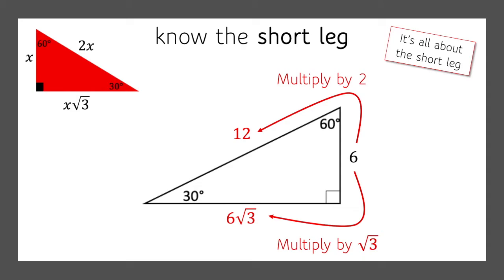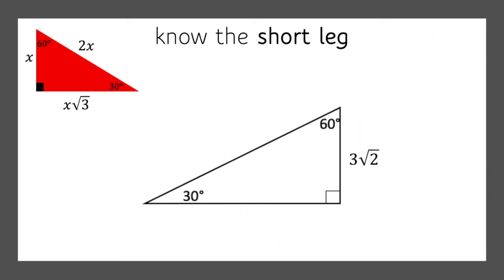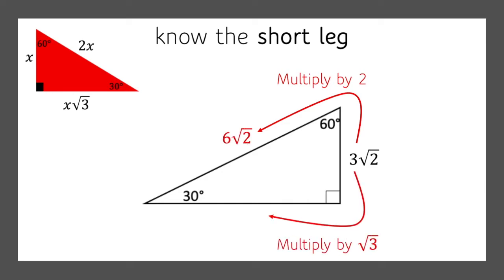Let's try another one. Let's say we know the short leg is 3 times the square root of 2. To find the hypotenuse, we multiply by 2, so we get 6 times the square root of 2. To find the long leg, multiply by the square root of 3, so we get 3 times the square root of 6.